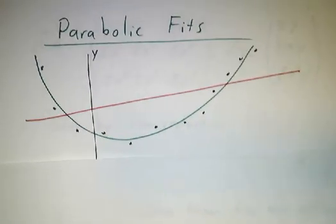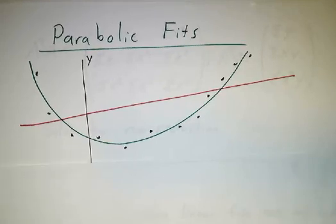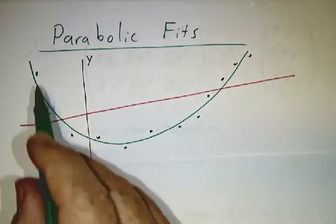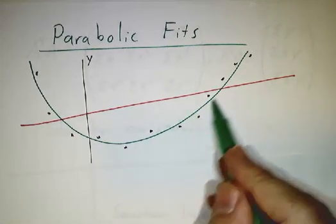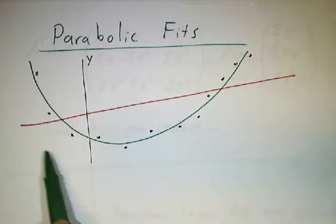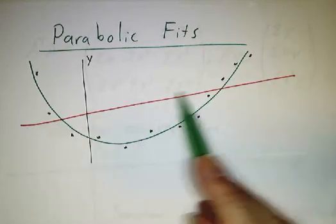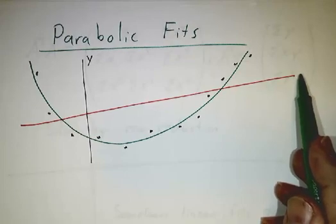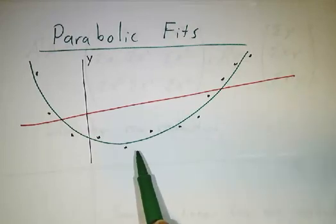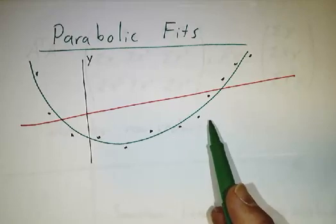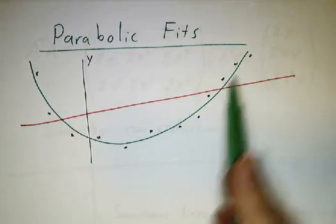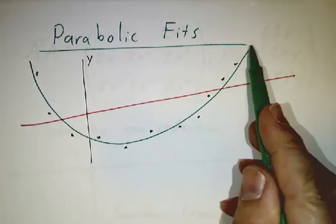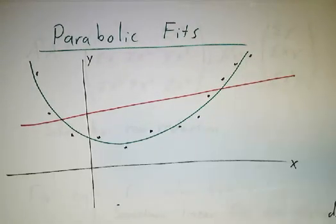Now let's go back to the problem of having one input and one output. Suppose you have data as these black dots. The best line through those black dots is something like this red line, and it ain't very good. If you gave me this data and said find the best line, I'd say: why a line? It doesn't look like a line at all — it looks like a parabola.